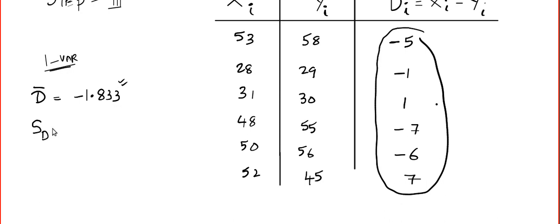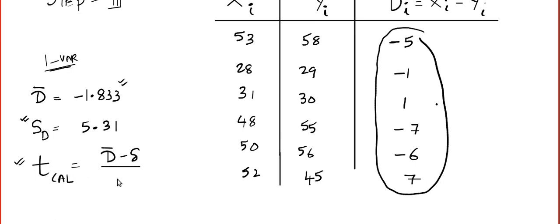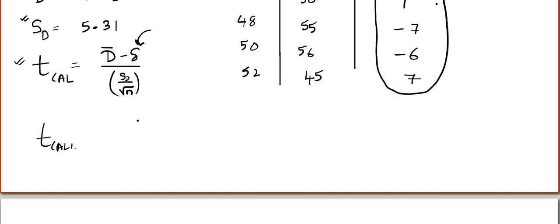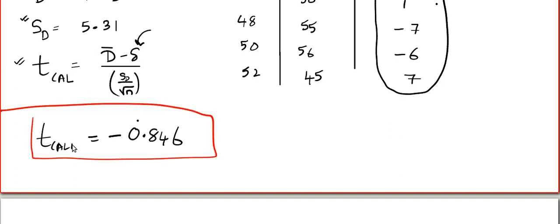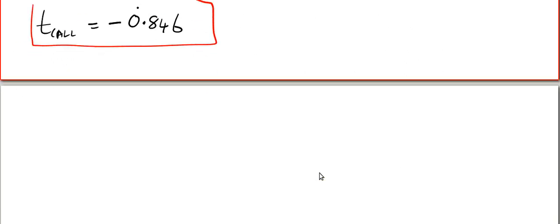d-bar comes to minus 1.833. The sample standard deviation sd is 5.31. Now calculate t-calculated using the paired t-test formula: d-bar minus delta, divided by sd divided by root n. Since delta is normally zero, plug in the values. I got t-calculated equals minus 0.846.